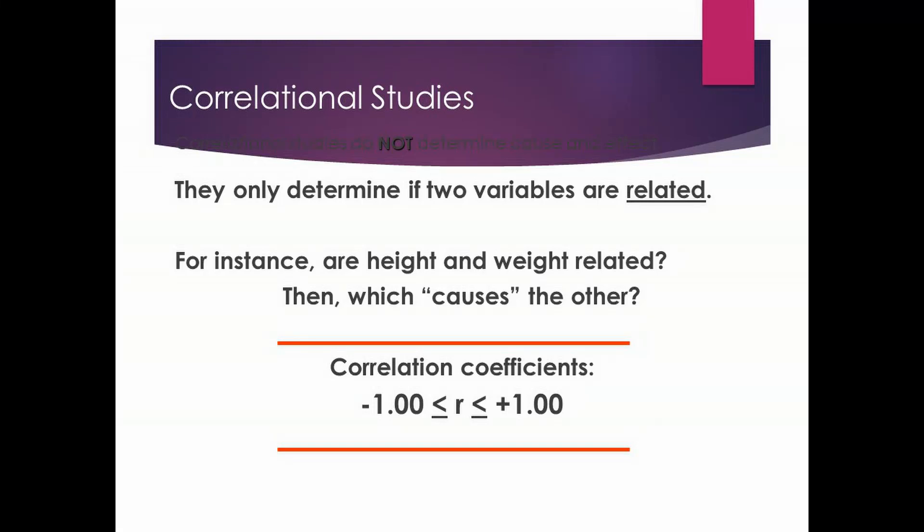Let's talk about one more type of research method, and that is the correlational study. You already know that experiments are really special, and the reason an experiment is special is because it can determine cause and effect. Correlational studies do not do this. They only determine if two variables are related.